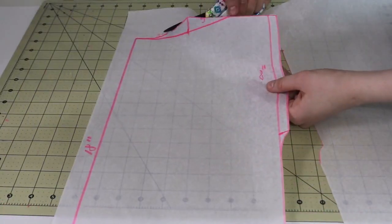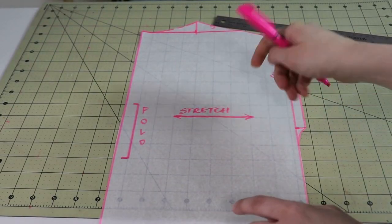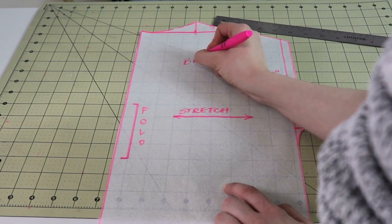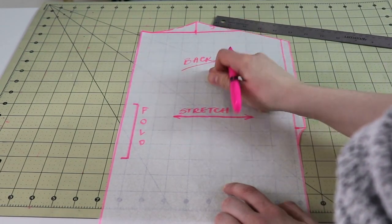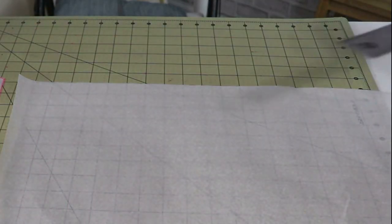You can go ahead and cut it out and do the following markings. Make sure that we cut it on the fold, so you see the fold marking. Mark the direction of the stretch of the fabric and also that it is a back piece. After that, let's move on to the sleeve.